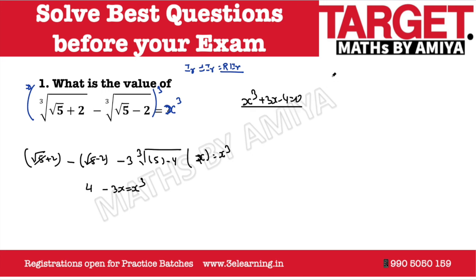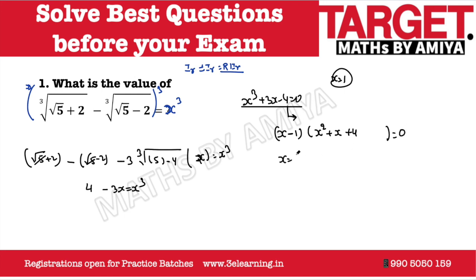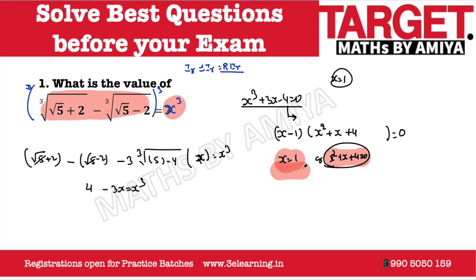From here, it is easily visible x could be 1, because we get 1³ + 3 − 4 = 0. So we can say (x − 1) is one of the roots. For the other roots, we factor: x² + x + 4 = 0, which has imaginary roots. But we know that x could be rational or irrational, but cannot be imaginary. So the value of x, which is the expression's value, equals 1 and that is the answer.